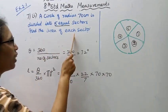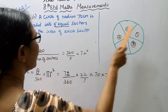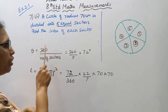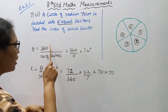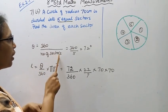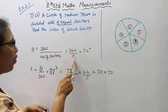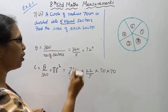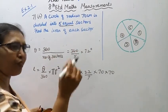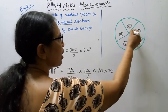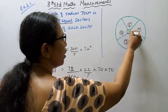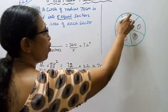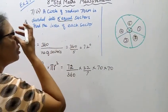For 5 equal sectors, the central angle theta equals 360 divided by the number of sectors. The number of sectors is 5, so theta equals 360 divided by 5. A full circle has an angle of 360 degrees, divided equally into 5 sectors.